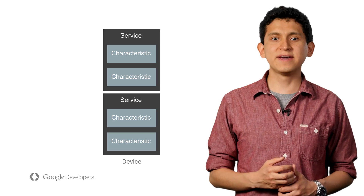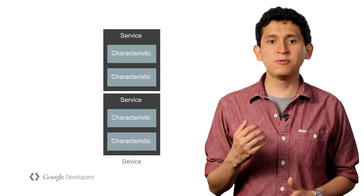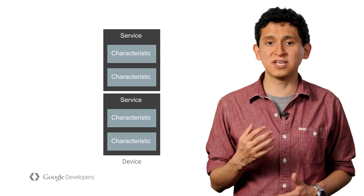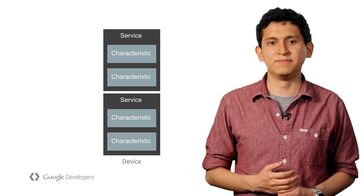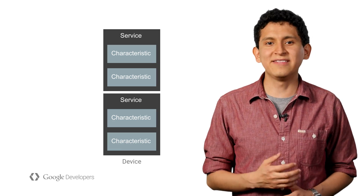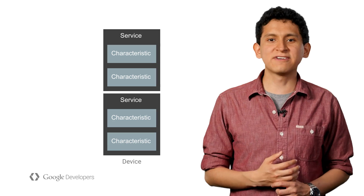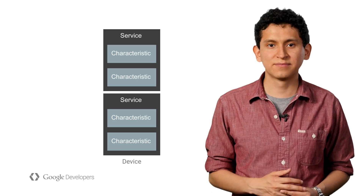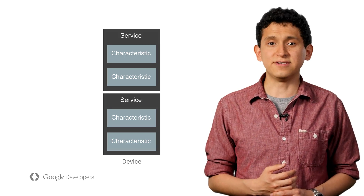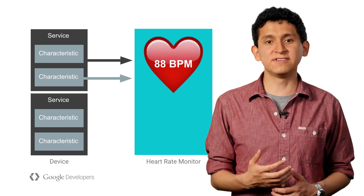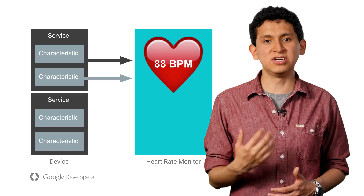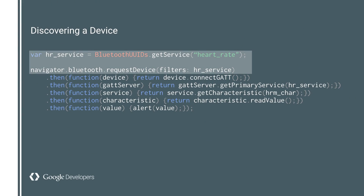We are currently working on the API to make all this available to developers, but before we show you how the current proposed API works, let's review some BLE concepts. A characteristic contains a value and descriptors that describe that value. You can think of a characteristic as a type, analogous to a class. A service is just a collection of characteristics. For example, a heart rate monitor has a heart rate service. The heart rate service contains a characteristic called heart rate measurement, which holds the value of the user's heart rate. A website could then connect to the device to read and write to characteristics, or subscribe to notifications from characteristics.